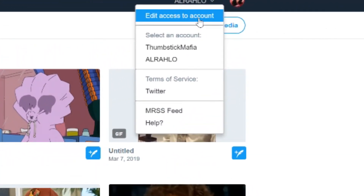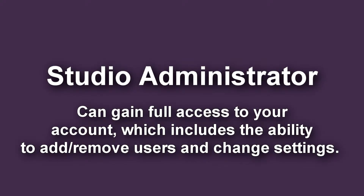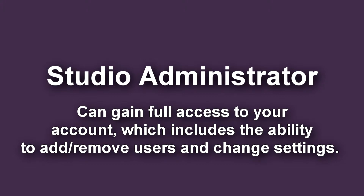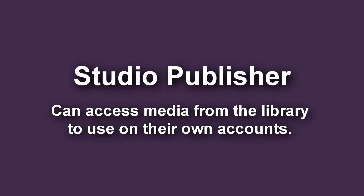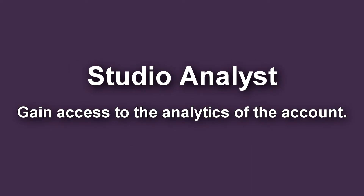Another great feature is that you can assign various roles to other MediaStudio users. To add access to your account, click on your Twitter name in the upper right corner and scroll to Edit Access to Account. There you can assign someone to be a Studio Account Administrator, a Studio Contributor, a Studio Publisher, or a Studio Analyst. A Studio Administrator can gain full access to your account, which includes the ability to add and remove users and change settings. A Studio Contributor can access to tweet from the account or act as the account; however, they cannot add or remove users. A Studio Publisher can access media from the library to use on their own accounts. A Studio Analyst has access to the analytics of the account.